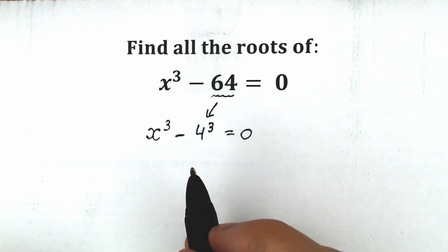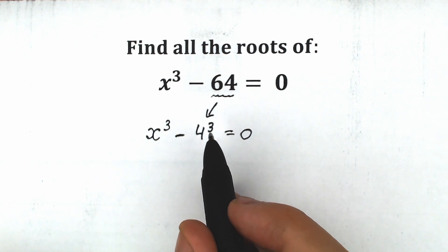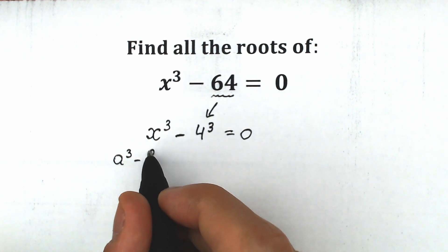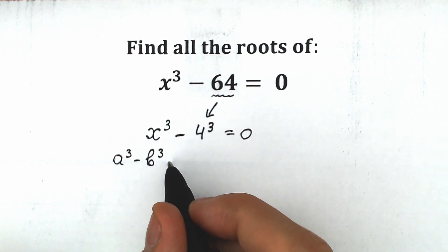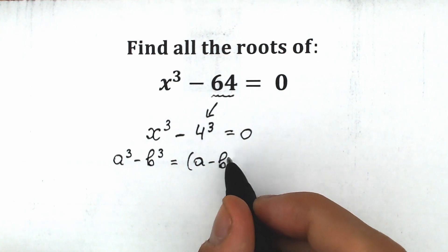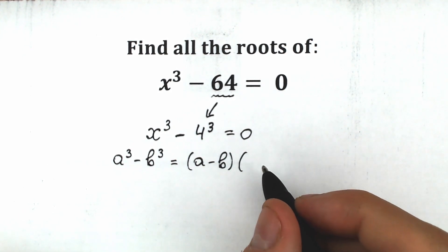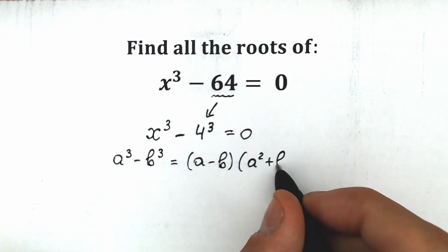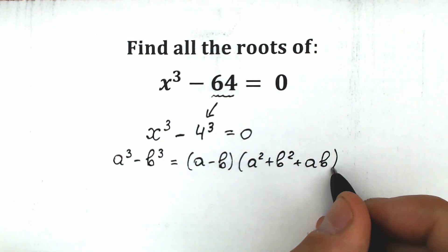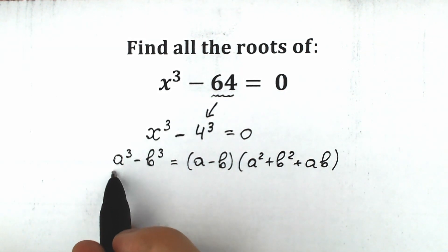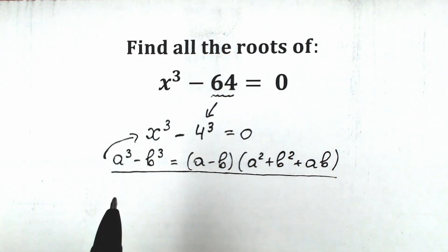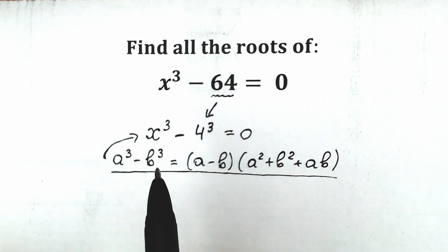If you look closely, we have x cubed and 4 cubed, so this looks like the formula a cubed minus b cubed — the difference of cubes formula. This formula equals a minus b, times the quantity a squared plus a·b plus b squared. We're going to apply this formula here because this is absolutely our case.